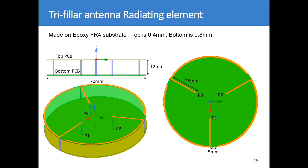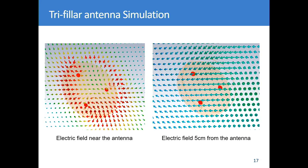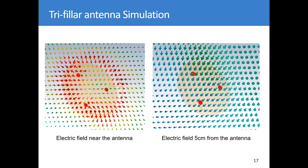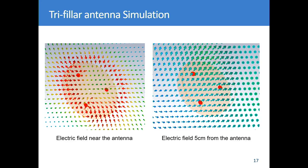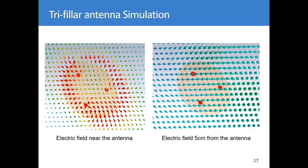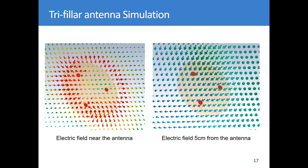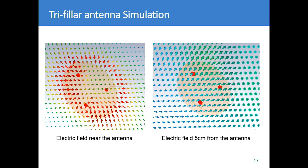Here is a simulation of this antenna. On the left, monitoring the electric field very close to the antenna, you can see the three antennas radiating with a time difference, each radiating a linear polarisation. But if I move my reference plane just five centimetres above the antenna, I have a beautiful rotating vector — this is because the three linear antennas combine into a circular polarisation.